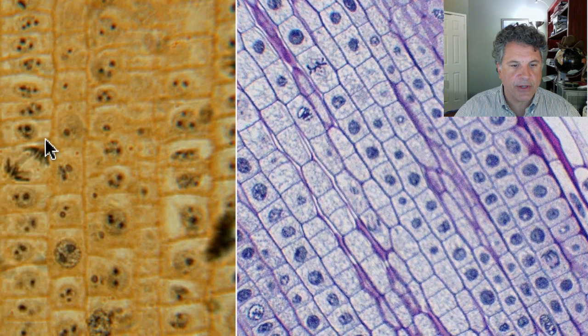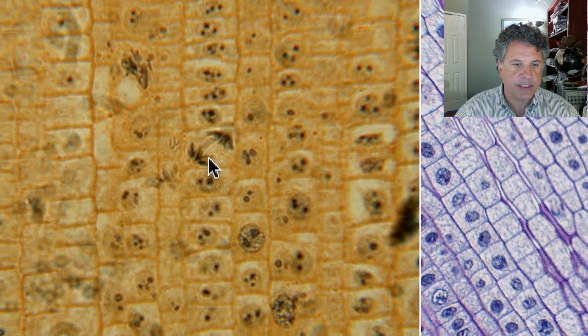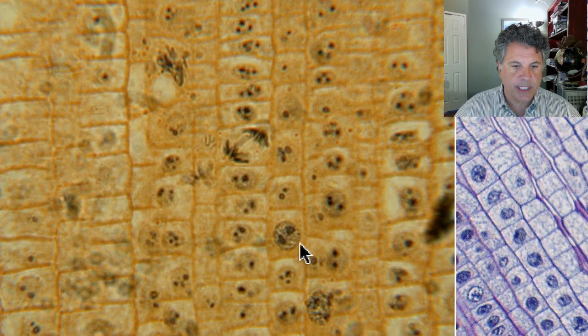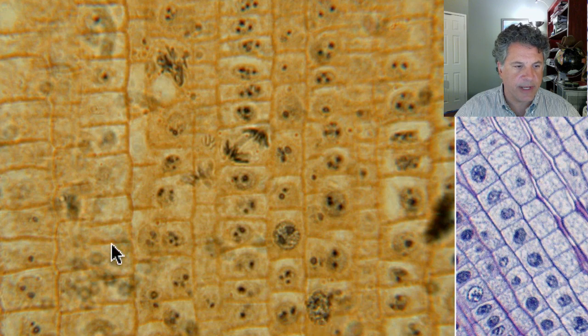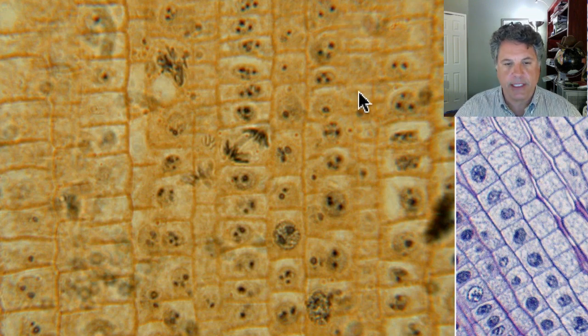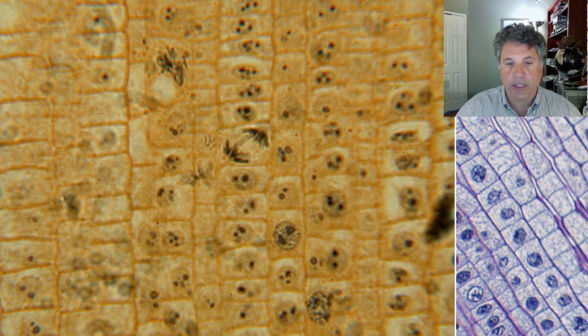Here's an even higher mag view, here's an anaphase of mitosis, here is an interphase cell, interphase, interphase, this cell is in late anaphase. So you can take a preparation like this or you could take a preparation of any organism cells grown in culture and stain those cells with a dye that binds to DNA and look at the percentage of cells that are in different stages of the cell cycle.